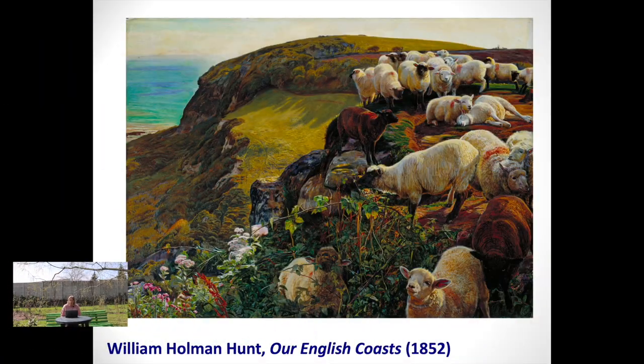The first one is by one of the Pre-Raphaelites. They didn't really focus on the landscape very often, though sometimes they did later in life and experimented with landscapes, especially John Everett Millais. Here we have a good example of a relatively early Pre-Raphaelite landscape by one of the principal members of the group, William Holman Hunt. The title is 'Our English Coasts,' sometimes called 'Stray Sheep' because you have sheep on the hill overlooking the sea.